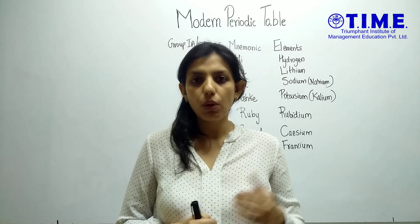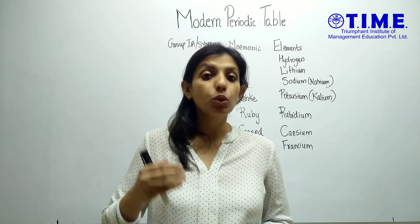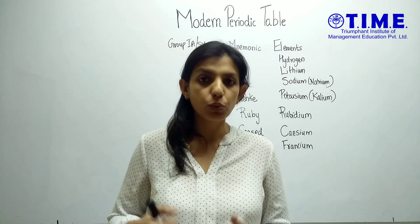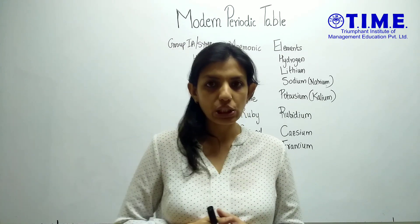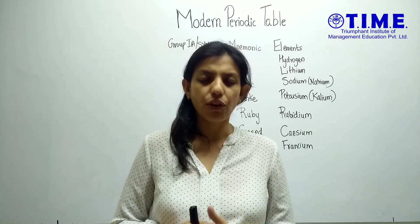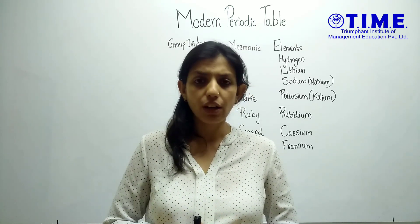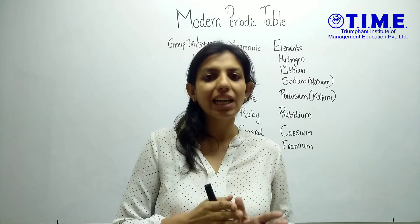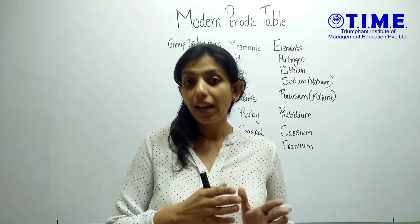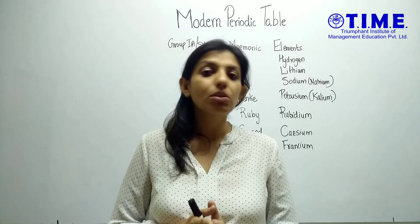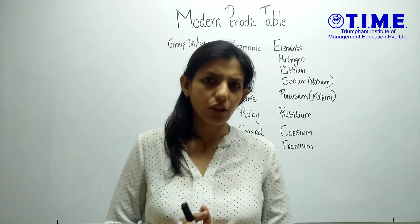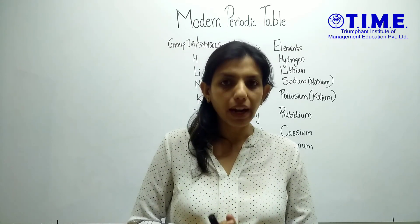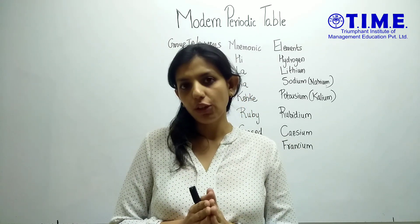Today we are going to cover Group 1, 2, 3, Groups 13, 14, 15, 16, 17 and the 18th group or the zero group. We are not going to cover the transition series as it is not in your 10th standard portion for any of the boards. We are going to cover only what you need to remember — the starting and ends of the periods — and I'll also give you a short mnemonic to remember the starting and ends of the lanthanide and actinide series.